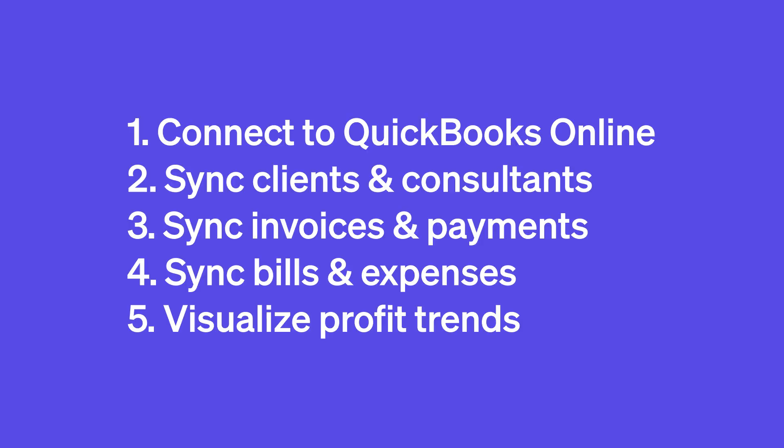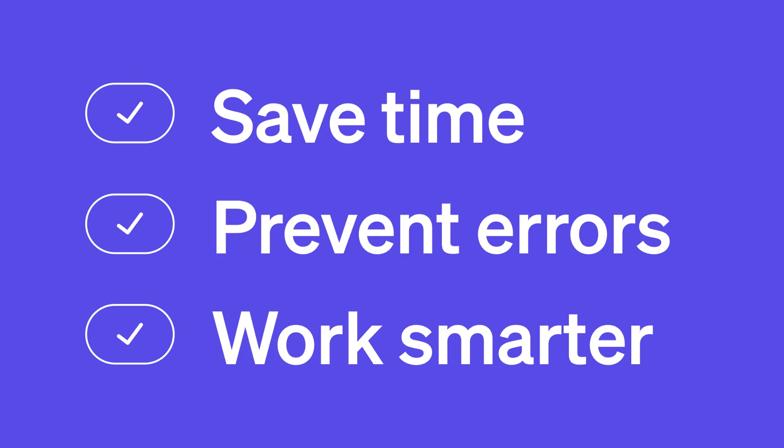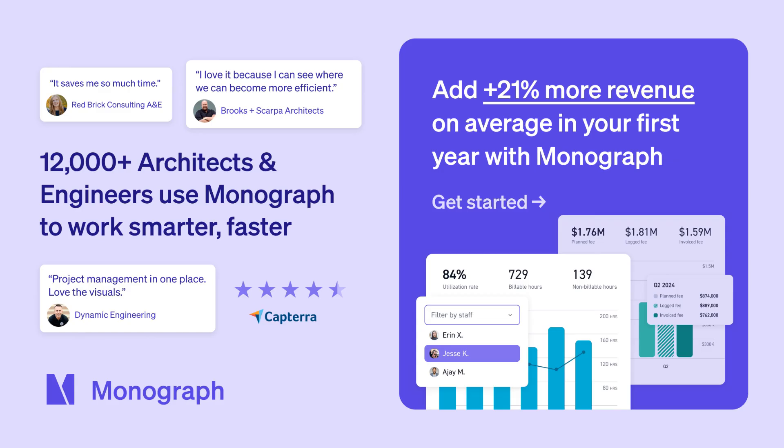These are five ways to simplify accounting for architects and engineers to save time, prevent errors, and work smarter. Over 12,000 architects and engineers use Monograph to work smarter and faster. You can add 21% more revenue on average in your first year with Monograph. Get started now to see if it'll work for you.